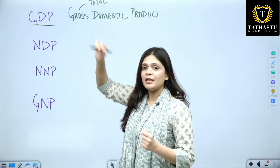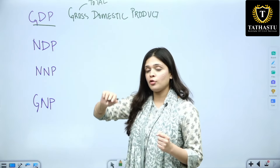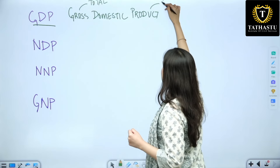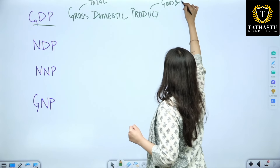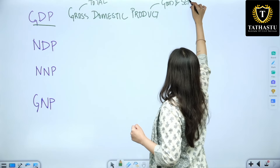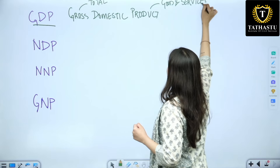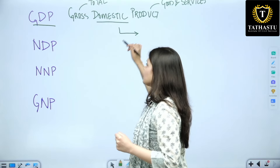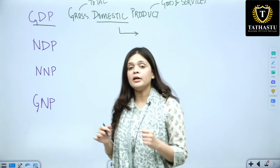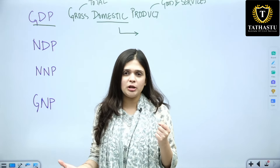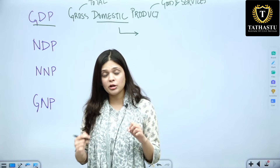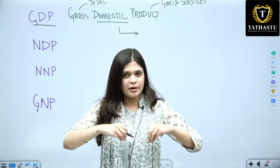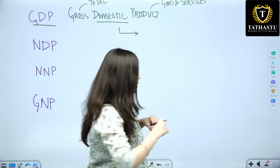When I say GDP, it is Gross Domestic Product. Here 'gross' means total, 'domestic' means the domestic territory — the geographical boundary of India plus 12 nautical miles — and 'product' means goods and services both.